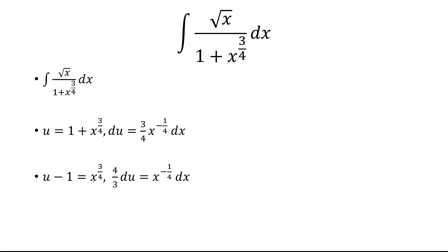Now the goal is to multiply these two together. So we have u minus 1 multiplied by 4/3 du. These two on the left multiply, and that's going to equal x to the 3/4 times x to the negative 1/4, which is x to the 1/2 power, and that's going to be the numerator.